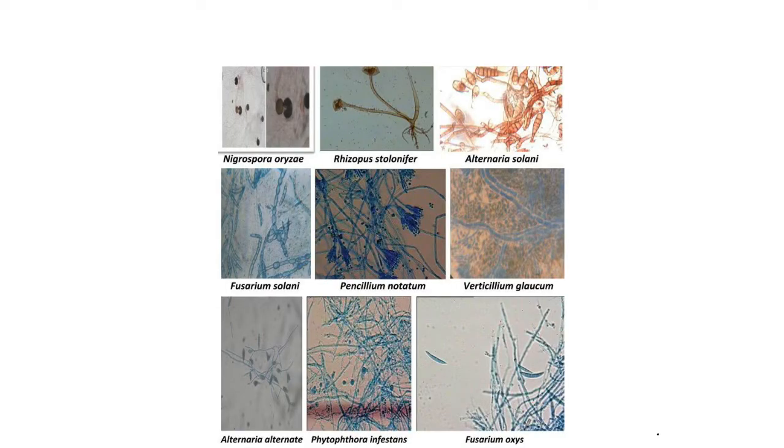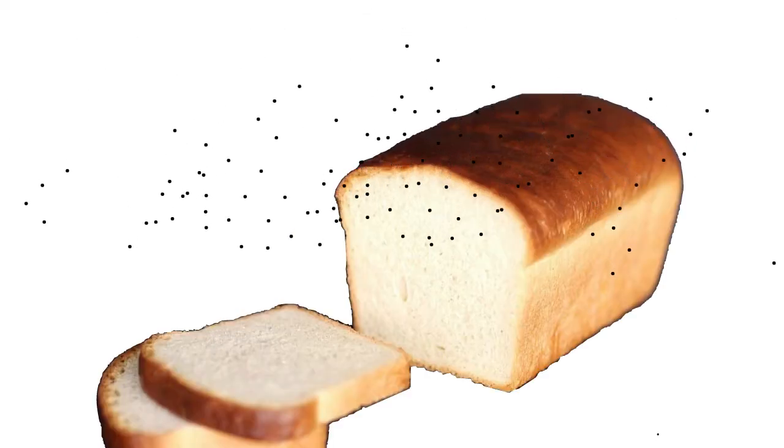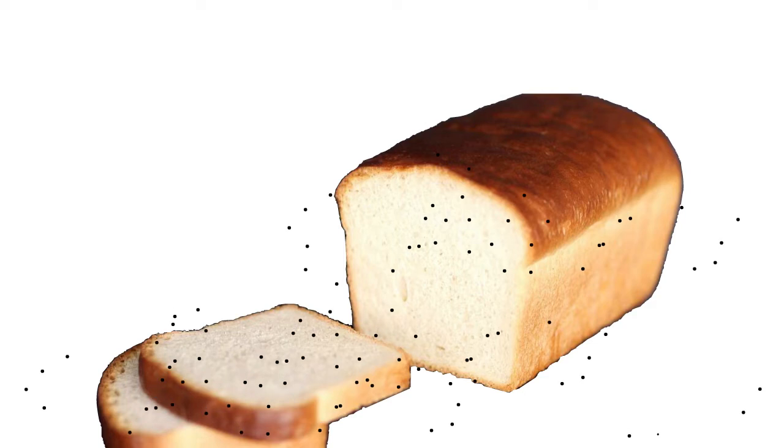Coming back to molds, the molds are of different colors and shapes based on the species. These molds reproduce by means of spores that are circulating in the air. When a suitable substrate such as bread is found, these spores settle on them and start growing.